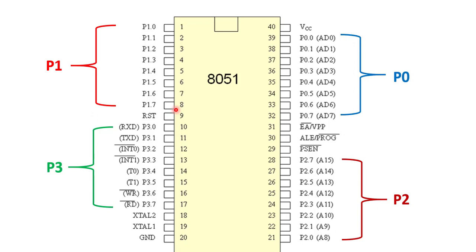Port 1 works as a general input/output port and does not have any other function. It can only be used to input or output bits using the port 1 register of the 8051 microcontroller — it works simply as an input/output port.